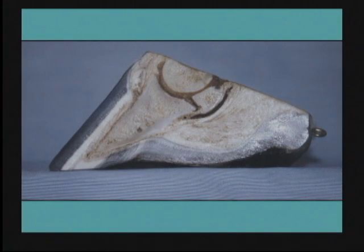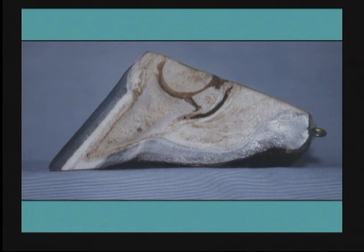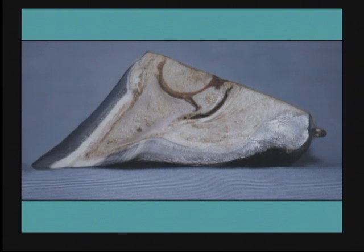Quite often farriers will trim the toe closer than it needs to be, and at that point the toe — if trimmed too close — will just migrate forward. That encourages the hoof care practitioner to leave even more heel, so it's an ongoing perpetual thing. I've done it in my early years as a farrier, and it was the most confusing thing I've ever dealt with — trying to overcome a problem when in fact I was just creating an even worse problem. Trimming the toe close and leaving the heels tall just perpetuated and set up a pathological situation.